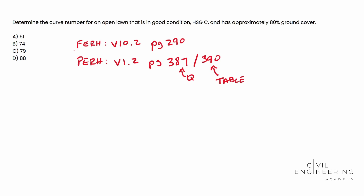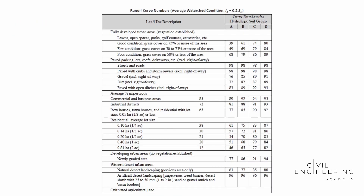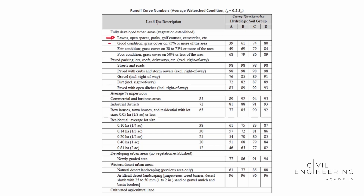Here's the table. We're looking at an open lawn in good condition, HSG C, and approximately 80% ground cover. In the table, open lawn falls under fully developed urban area, open space. Good condition means we're looking at 75% or more ground cover, which matches our 80%. HSG C is this column here — remember, HSG stands for hydraulic soil group. Dragging our arrow down, it looks like our curve number is 74.